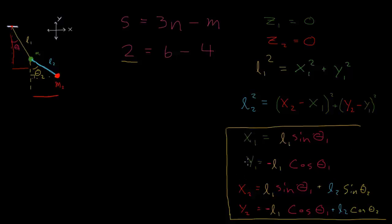So we have our x1, y1, x2, y2, all in terms of theta1 and theta2. Now in this video, we're going to write out our Lagrangian and see what happens.